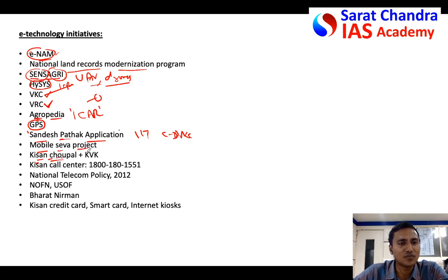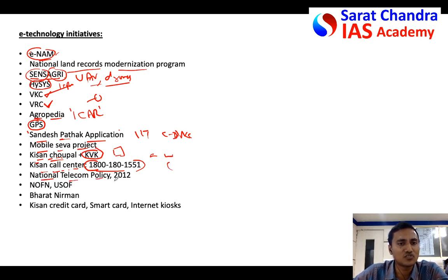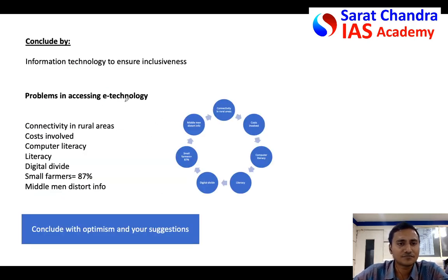Kisan Chopal in Bihar works closely with Krishi Vigyan Kendras, bringing farmers together on weekends to train them through videos on latest farming methods. Kisan Call Centers help farmers with agricultural queries. The National Telecom Policy 2012 mandates that all villages be connected with internet through the National Optical Fiber Network (NOFN), so farmers can access information at computer centers. Kisan Credit Card and smart cards can also be mentioned.